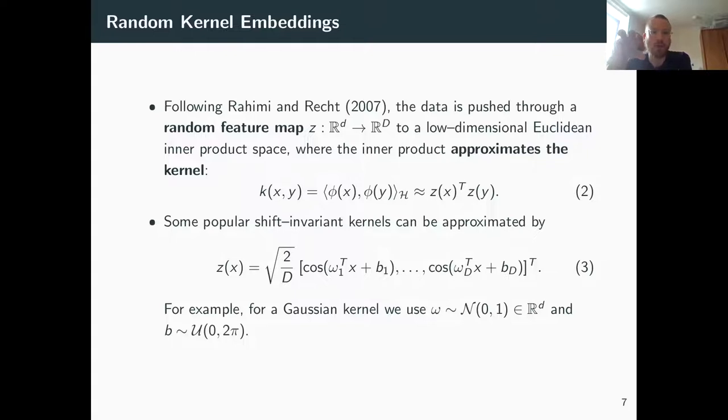But then we're again back to this problem with the kernel that can be costly if we have to evaluate that between every single sample in our MCMC chain and memory intensive. So what we do is we borrow some ideas from machine learning and this is a pretty widely used approach where you take your data, that means the actual MCMC samples, and put them through a random feature map that approximates the kernel.